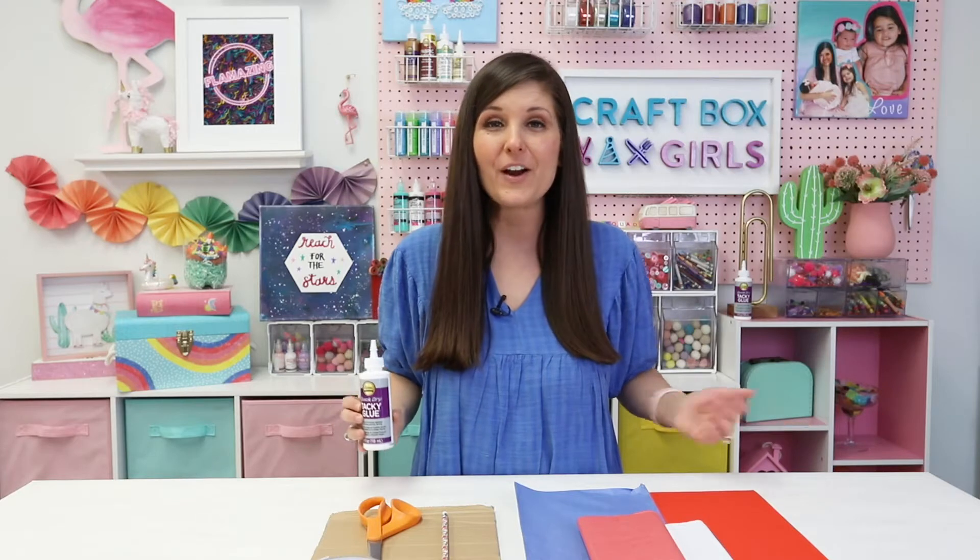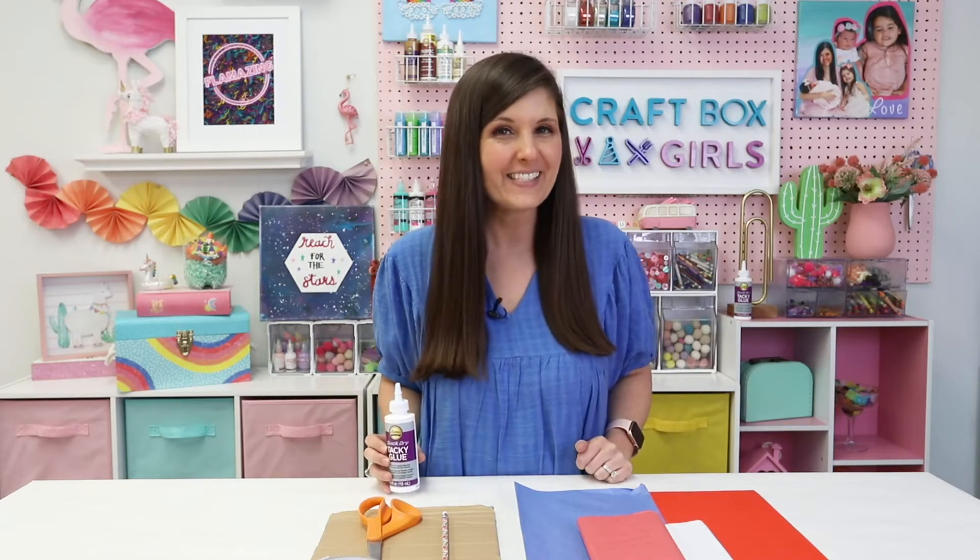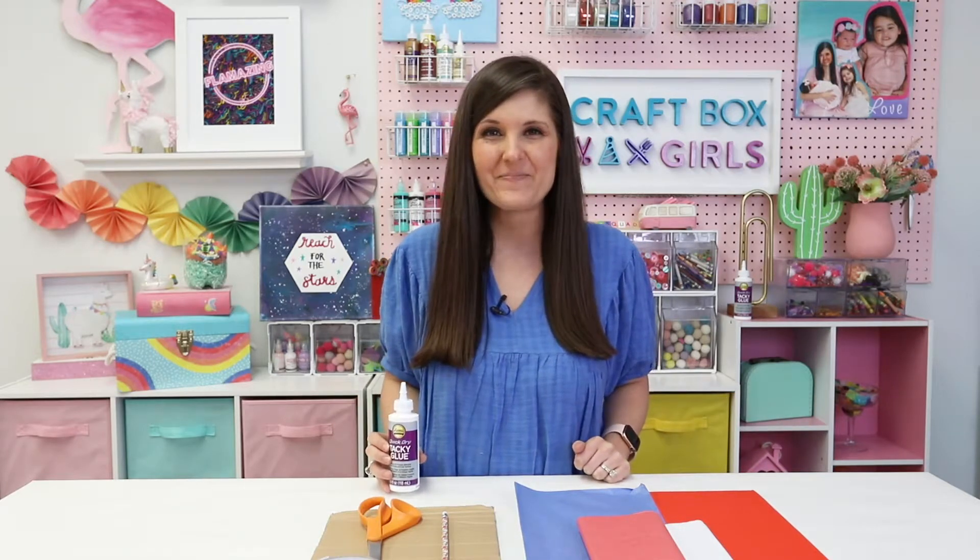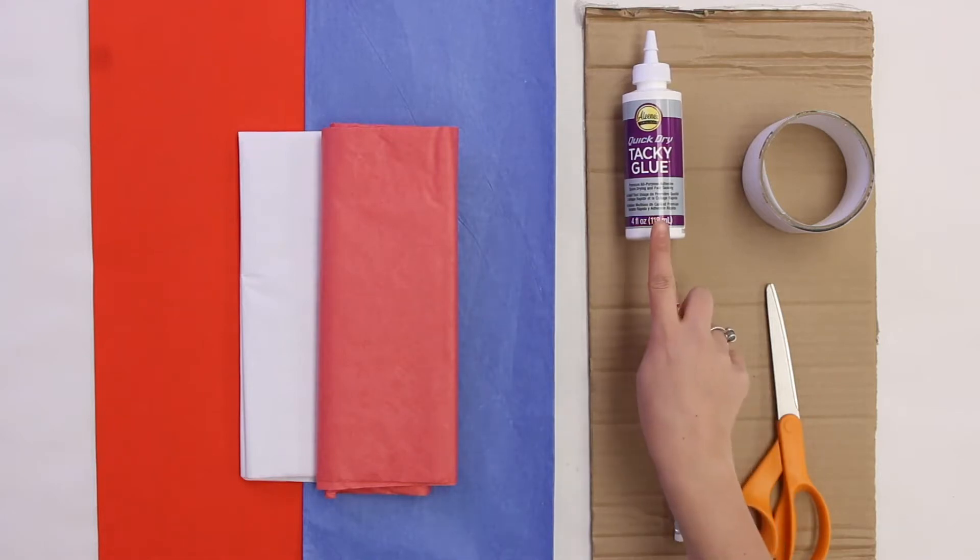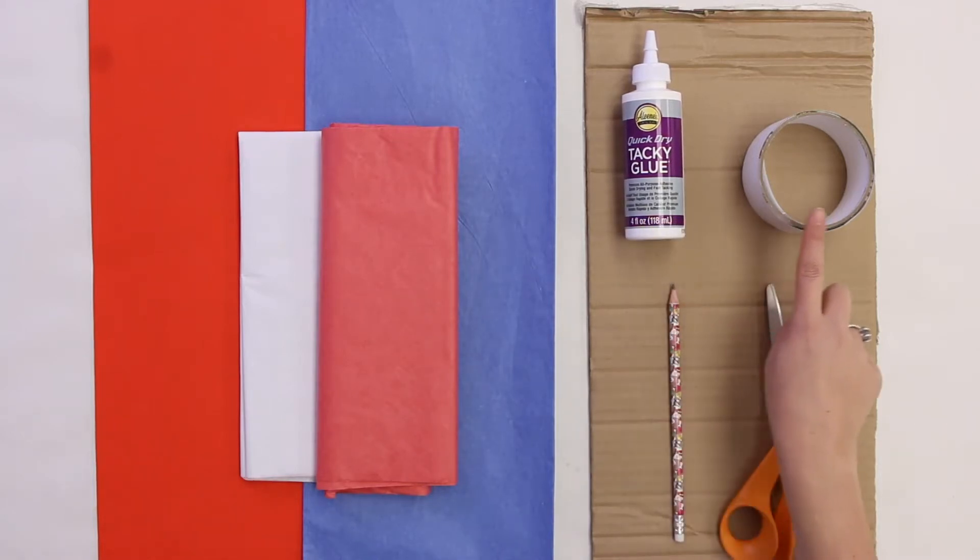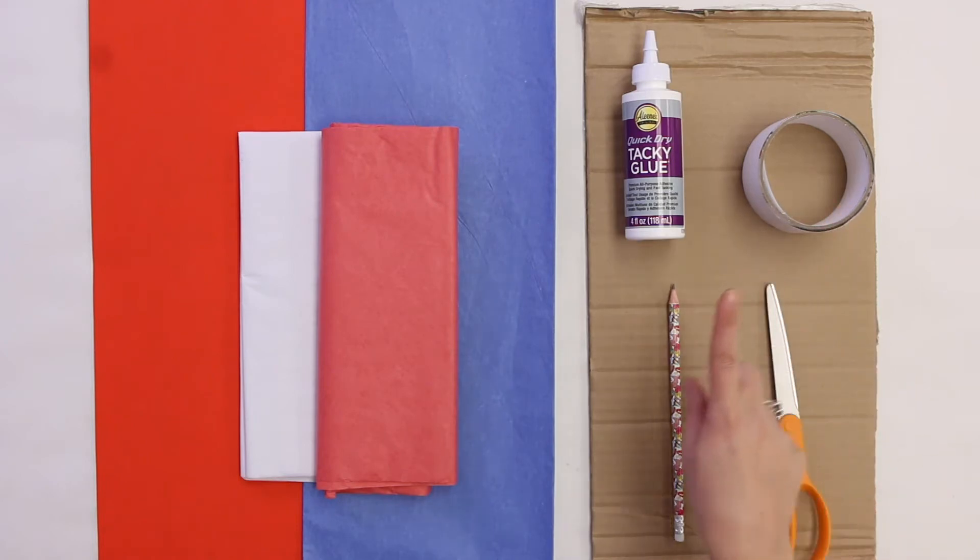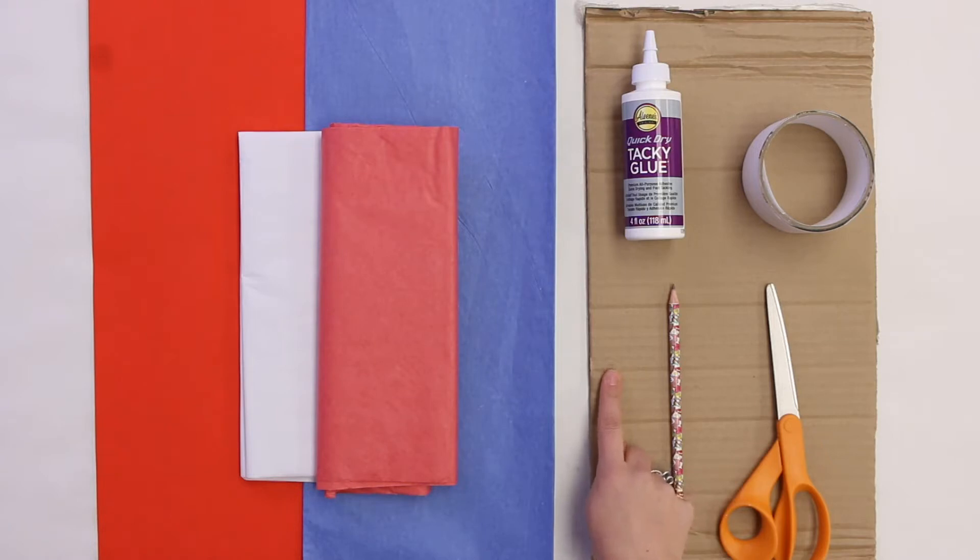All right, all you need are a few household things to make this fun 4th of July game. In addition to the Aleene's Quick-Dry Tacky Glue, you're also going to need some clear packing tape and a scrap piece of cardboard. The size of the piece will depend on how big you want your popsicle pinata to be.